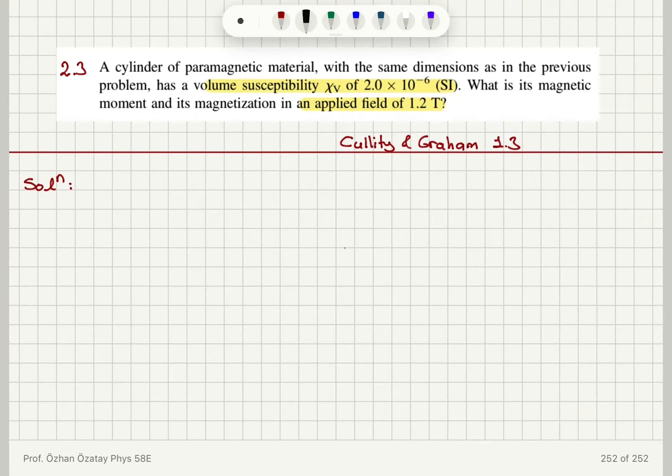Now, the volume susceptibility χ is the ratio of magnetization to the magnetizing field H, so it's a measure of how much magnetization we can obtain for a given magnetizing field. So we have magnetization is equal to volume susceptibility times H.